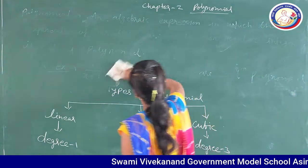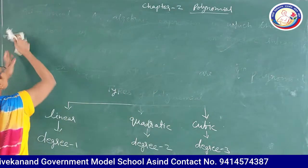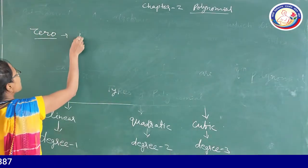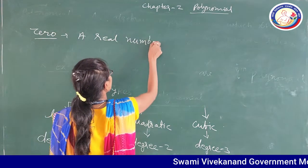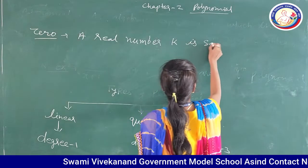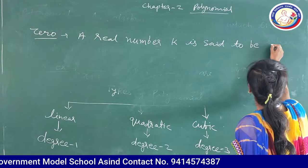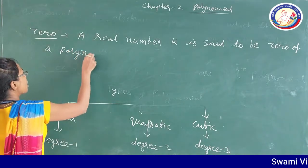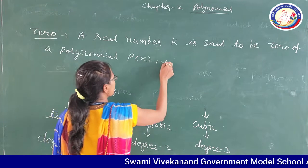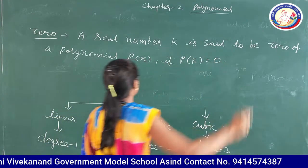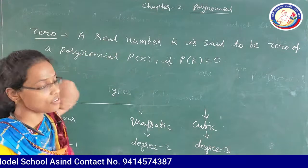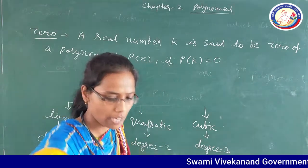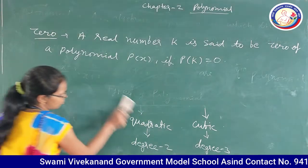Next topic is zeroes. The meaning of zeroes: a real number k is said to be a zero of a polynomial p(x) if p(k) equals zero. That means if we put a number inside a polynomial and the value of that polynomial becomes zero, then that number is called a zero of the polynomial.